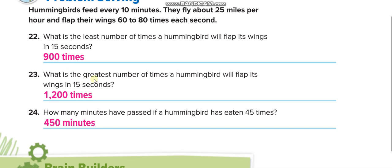And to multiply the greatest time. To find out the greatest number of times a hummingbird will flap its wing in 15 seconds. 80 is for 1 second. For 15 seconds, 80 times 15.